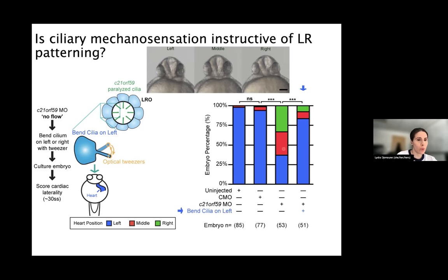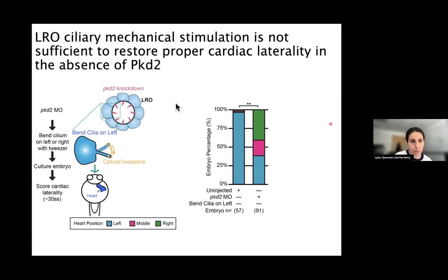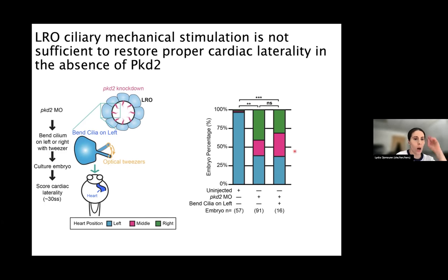Knowing that you can rescue proper lateralization by bending only one cilium on the left side, can you do the opposite and drive lateralization on the right side by bending one cilium on the right? We did that and could indeed force lateralization on the right side by bending only one cilium for an hour — strongly demonstrating that ciliary mechanosensation is sufficient for proper left-right patterning. We also did this rescue experiment in the absence of PKD2: without the polycystin-2 channel we couldn't rescue proper lateralization, confirming that PKD2 is critical for LRO mechanosensation and proper lateral patterning.